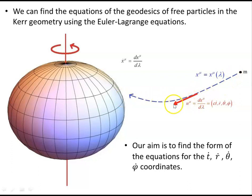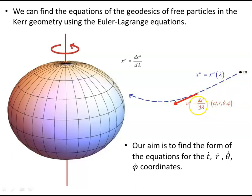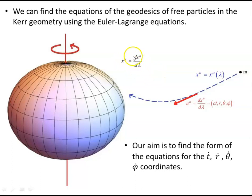Tangent to these geodesics is the four-velocity of the particle. Throughout these two videos we'll work with the four-velocity and the four-momentum, both of which are tangent to the geodesics at all points. In terms of the four-velocity we have ct dot, r dot, theta dot, phi dot as the coordinates. The dot notation stands for dx^μ/dλ, so each dot means differentiating with respect to lambda, and two dots means the second derivative with respect to lambda.